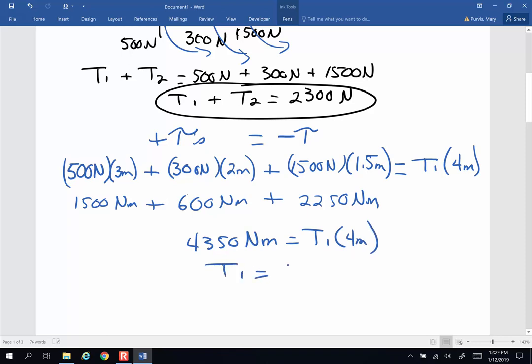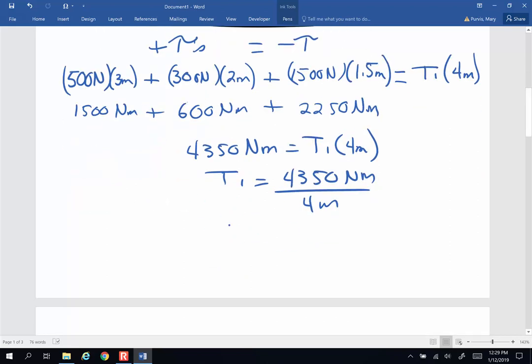So tension one will be 4350 newton meters divided by four meters. Tension number one then is going to be 1087 newtons. Cool, I've got one.